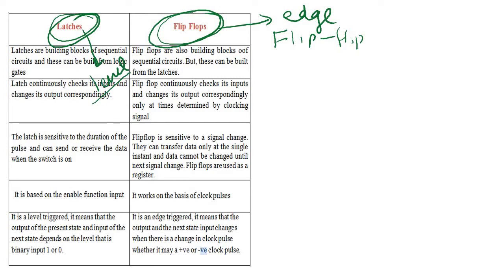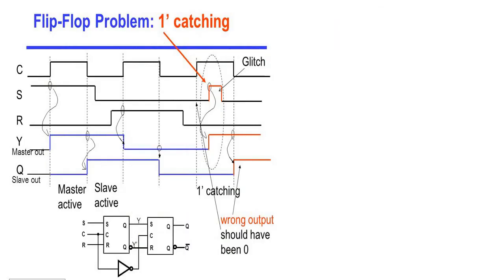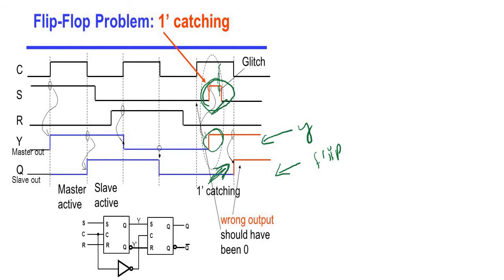Let's understand level-sensitive and transition-sensitive behavior using a timing diagram. If your input data is changing at a certain moment and you are using a latch, it is level-sensitive — it will detect the change in input and immediately reflect it at the output. However, in the case of a flip-flop, the output won't change with the input; it will wait for the transition of the clock. This level-sensitive nature of the latch causes glitches in the output, which is undesirable.